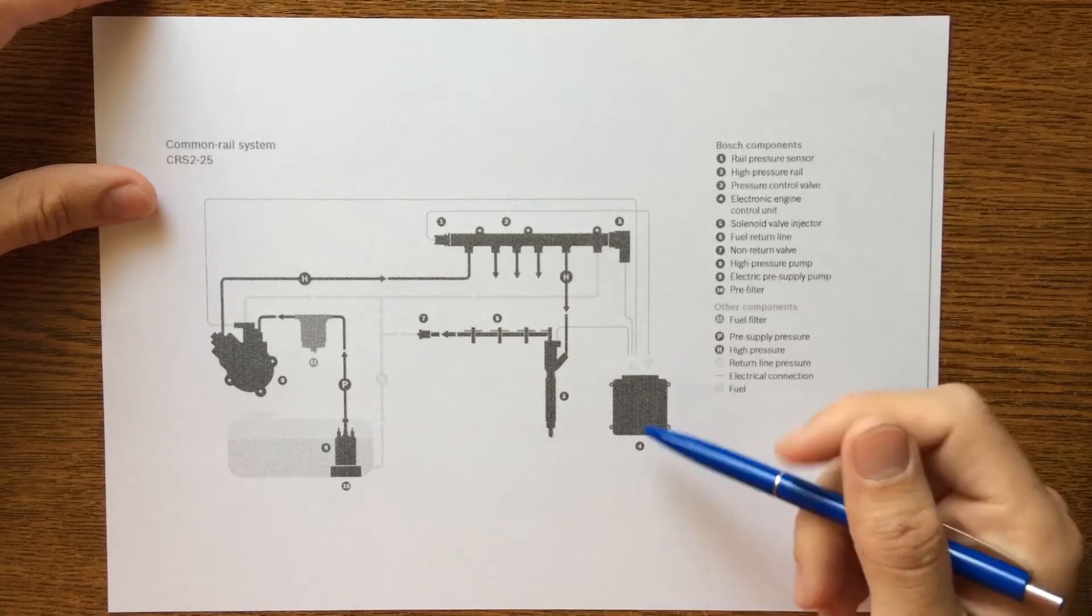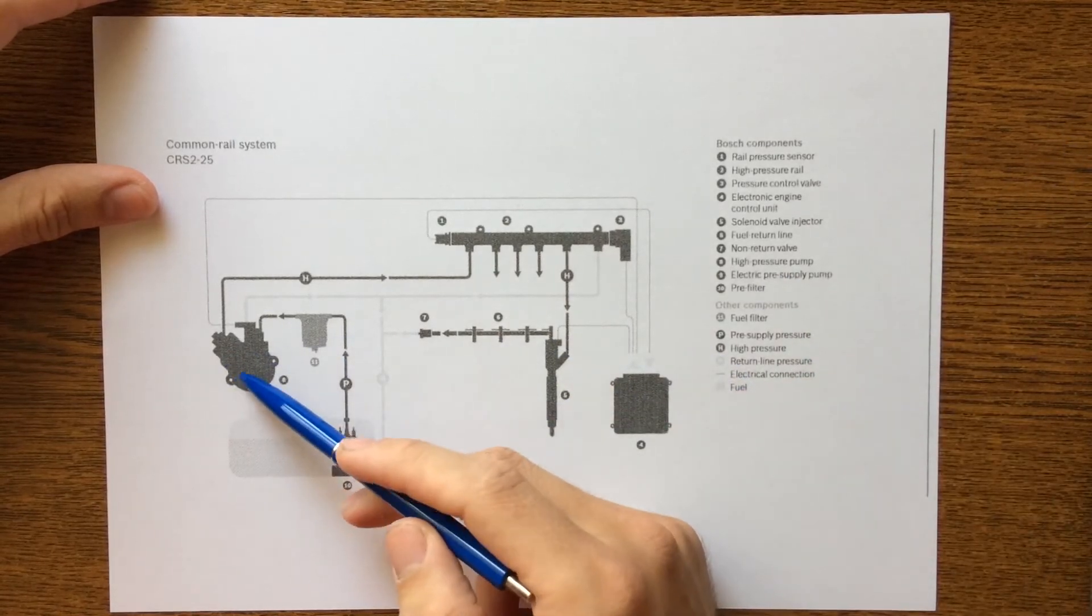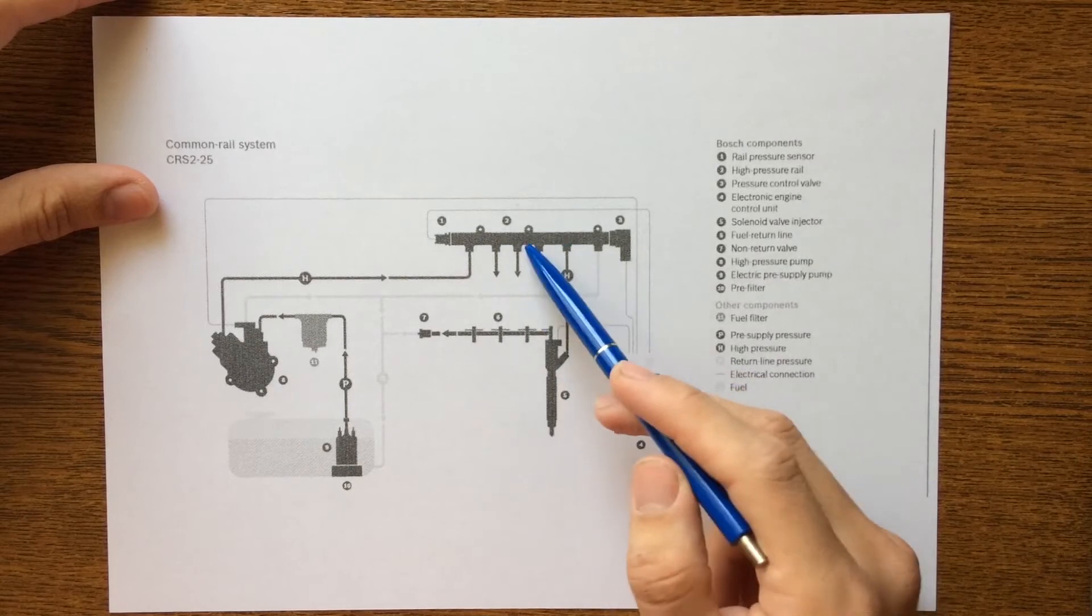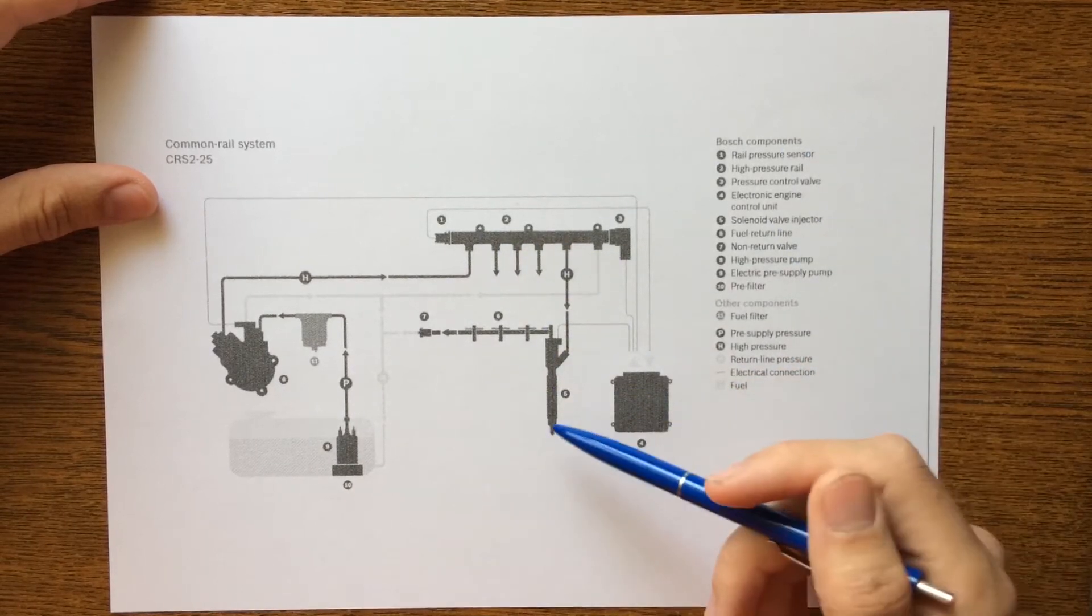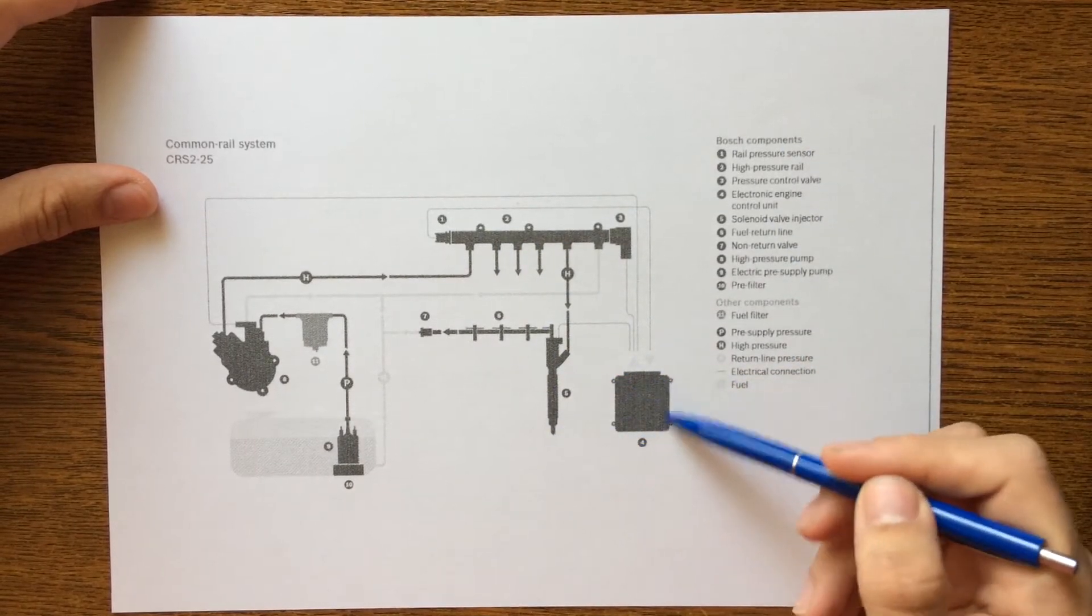The system consists of a high pressure pump, a high pressure rail, an injector for each cylinder, and an electronic control system.